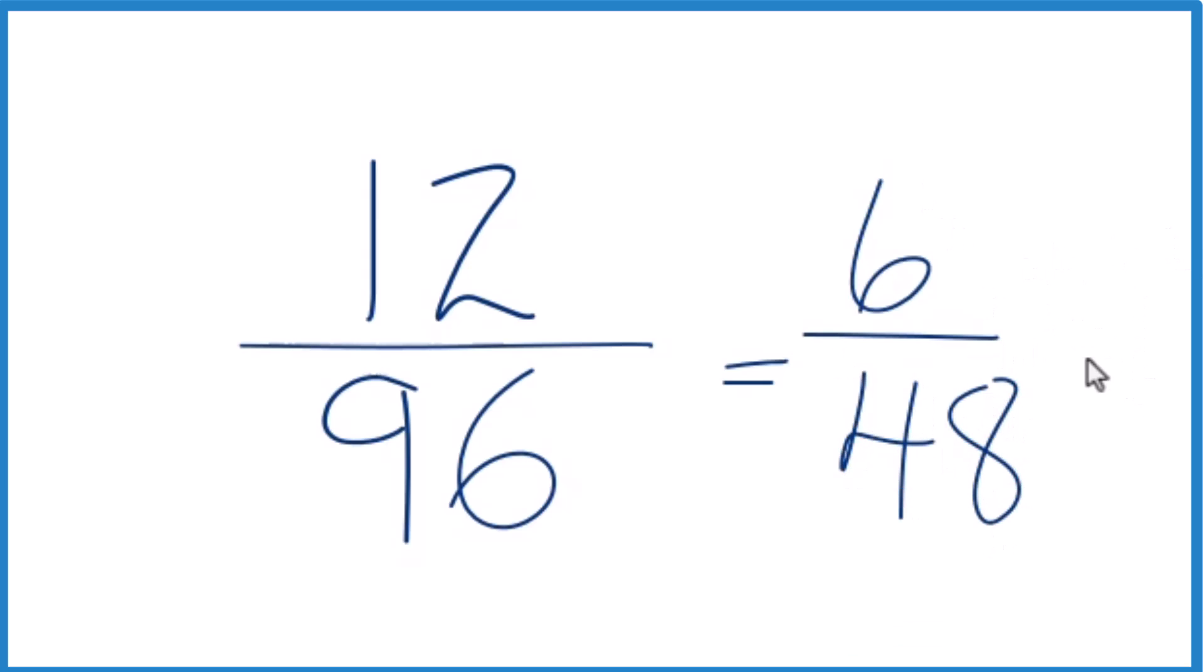You could do it again. These are even. So 6 divided by 2 is 3, 48 divided by 2 is 24.